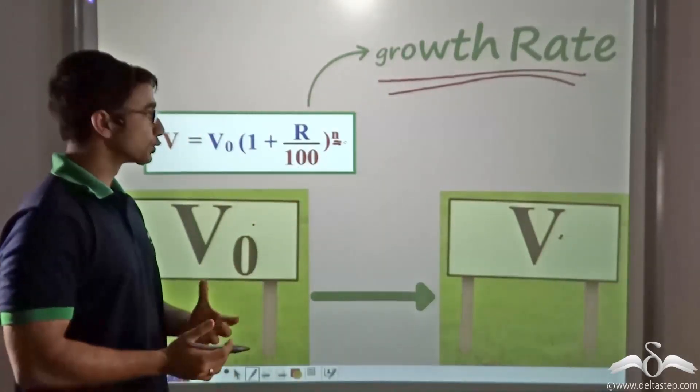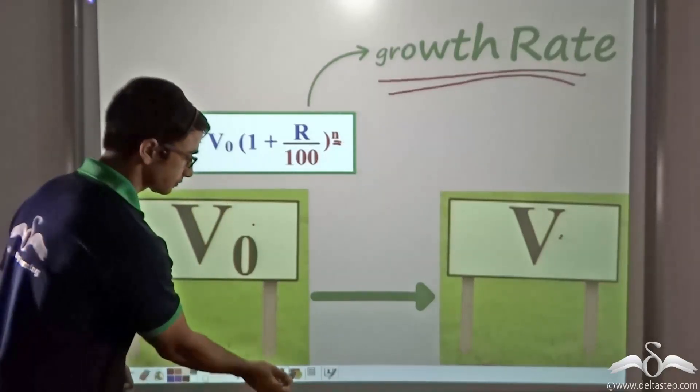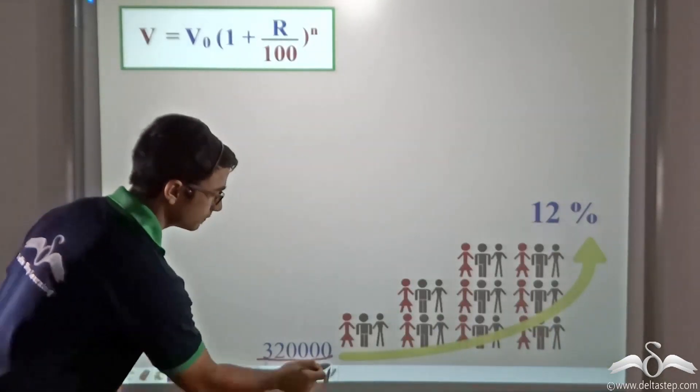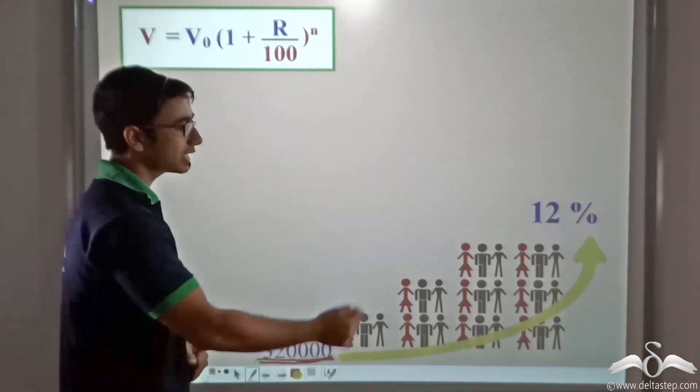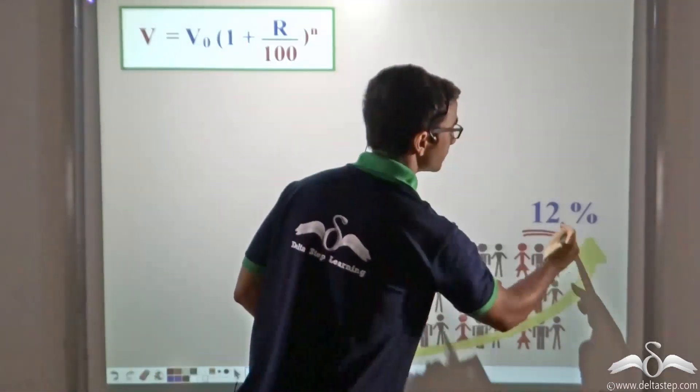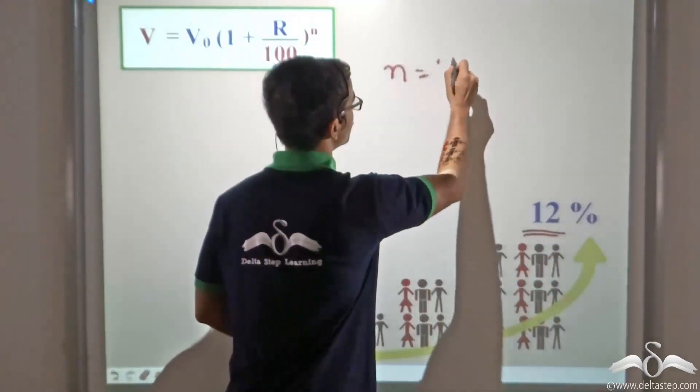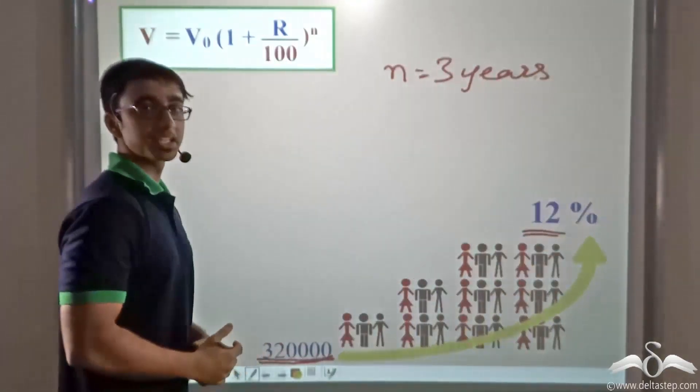So now let us see using this concept how we can solve a very simple problem. The problem that has been given to us is the population of a town is 3,20,000 and it is growing at the rate of 12 percent. So we have to find out that at the end of 3 years what is the population of the town.